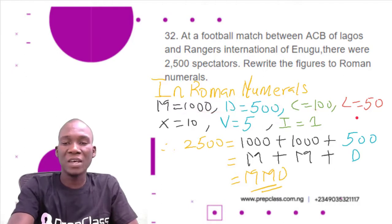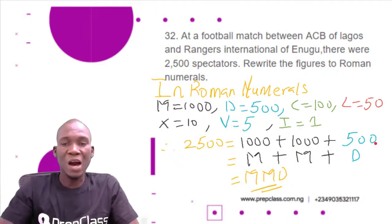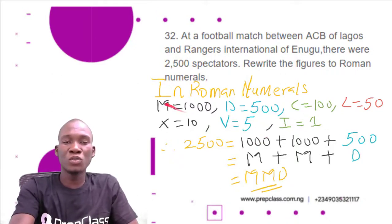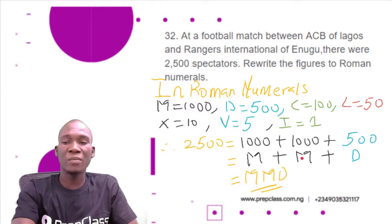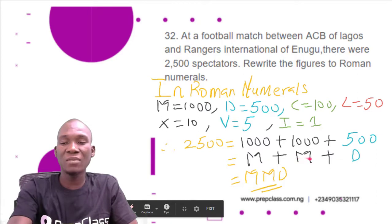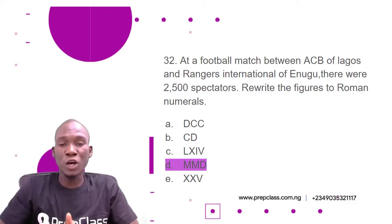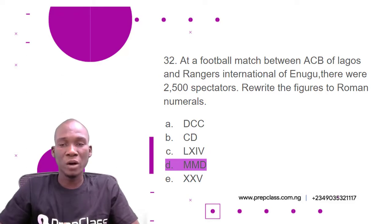We express 2500 as 1000 + 1000 + 500, which equals 2500. Converting to Roman numerals: 1000 is M, 1000 is M, and 500 is D. Combining them gives MMD. So the correct option is D: MMD is the Roman numeral for 2500.